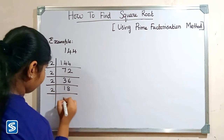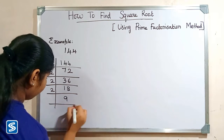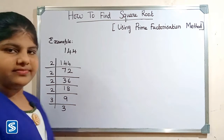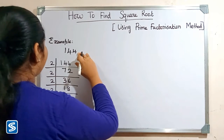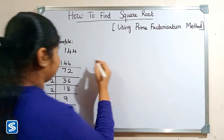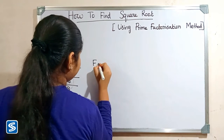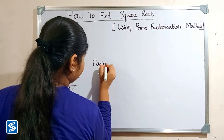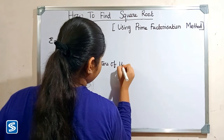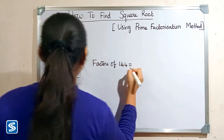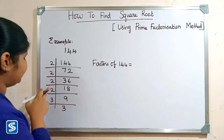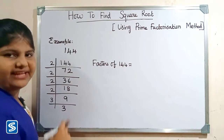Two nines are eighteen, three threes are nine. So the factors of 144 are: 2 × 2 × 2 × 2 × 3 × 3.